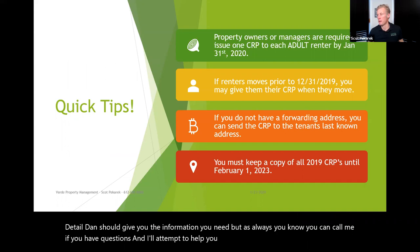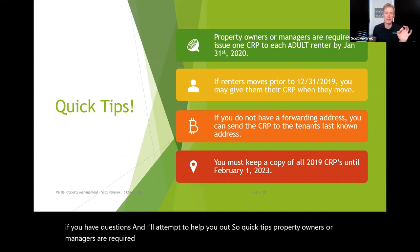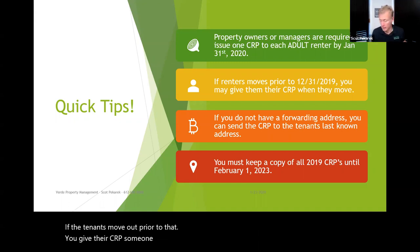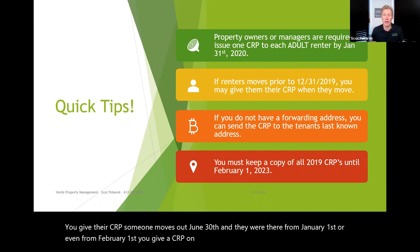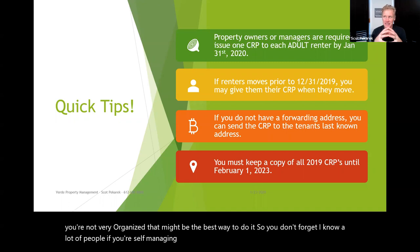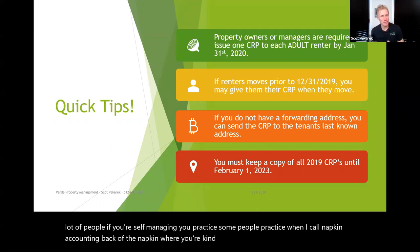Property owners or managers are required to issue one CRP to each adult renter by January 31st, 2020. If the tenants move out prior to that, give them their CRP at that point — say someone moves out June 30th, you give them a CRP on the spot. If you feel you're not very organized, that might be the best way to do it so you don't forget. Some people practice what I call napkin accounting — back of the napkin, kind of winging it — not the best strategy.